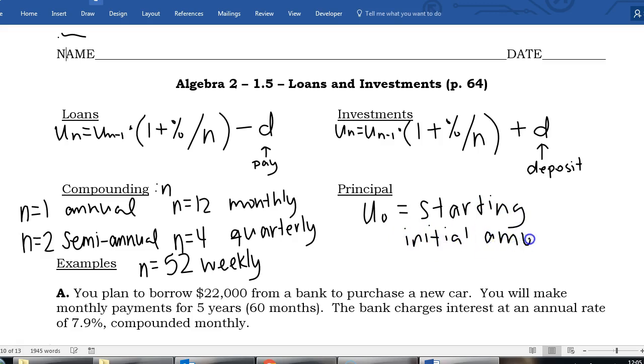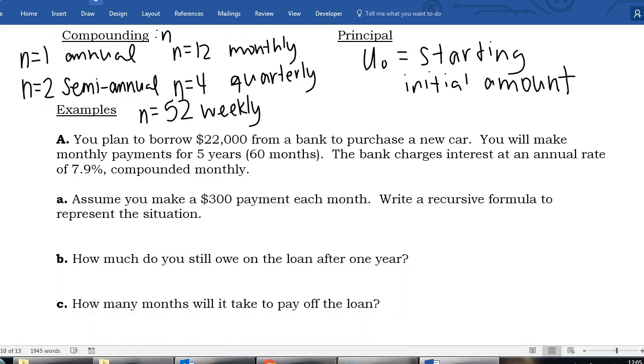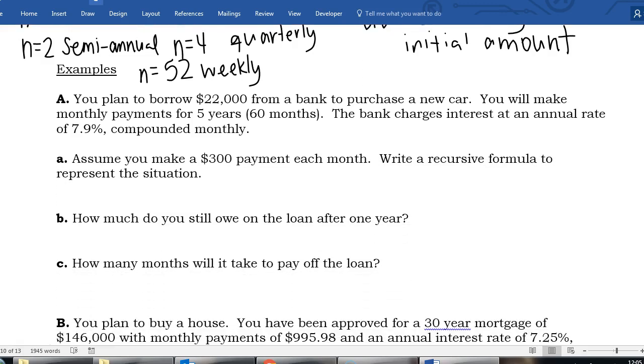Okay so let's scroll down and try a couple of examples. First example A says you plan to borrow $22,000 from a bank to purchase a new car. You will make monthly payments for five years, which is 60 months, and the bank charges an annual rate of 7.9% compounded monthly. Assuming you make a $300 payment each month, write a recursive formula to represent the situation. So I'm going to start with u sub zero for our principal or initial amount and that is $22,000.